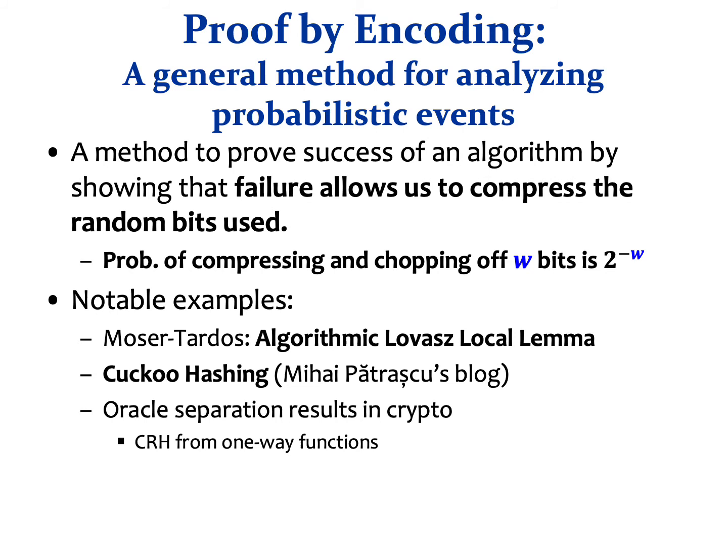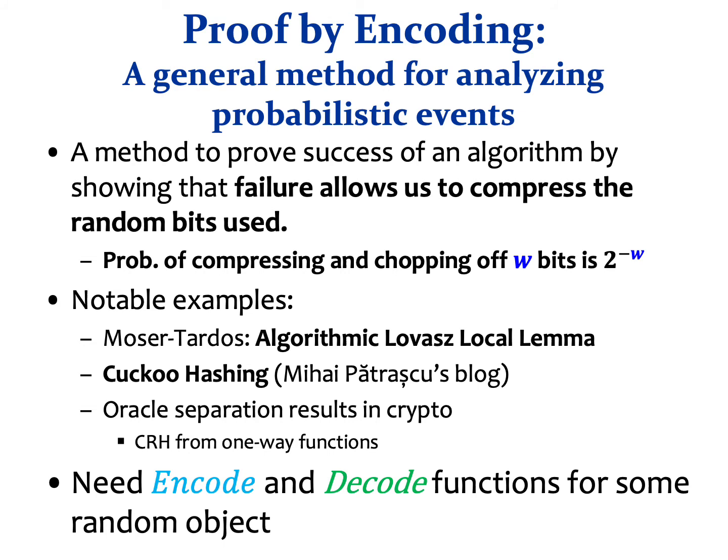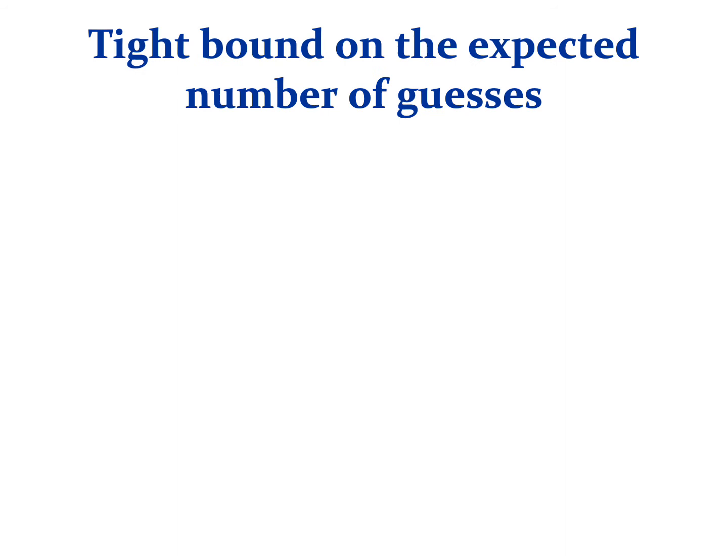Some notable examples of proof by compression are Moser and Tardosh's proof for the algorithmic Lovász Local Lemma, the success rate of cuckoo hashing, and oracle separation results in cryptography. The main ingredient for proof by compression is an encoding scheme in the form of encode and decode functions for a random object from some domain.